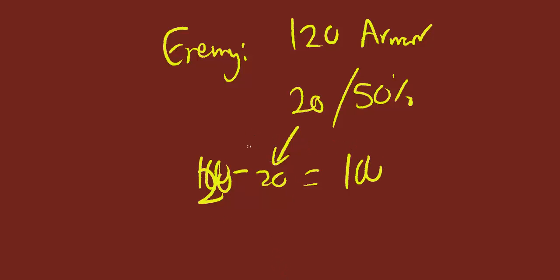And then after the flat armor penetration has been taken into account, this calculation occurs, and 100 times 0.5 gives 50. So the enemy's final armor ends at 50, the way the calculations are currently done.